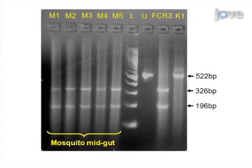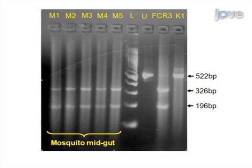Ultimately, results can be obtained that show high quality mosquito and malaria parasite DNA suitable for use as template to identify Anopheles vector species and genotype malaria infections through PCR and allele-specific restriction enzyme digestion.